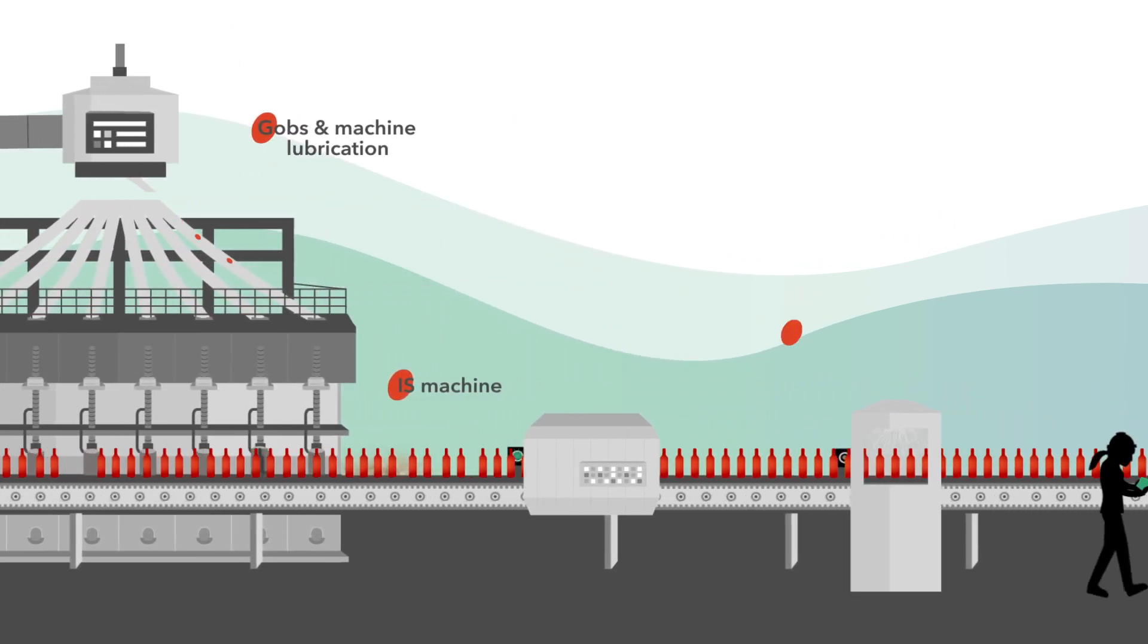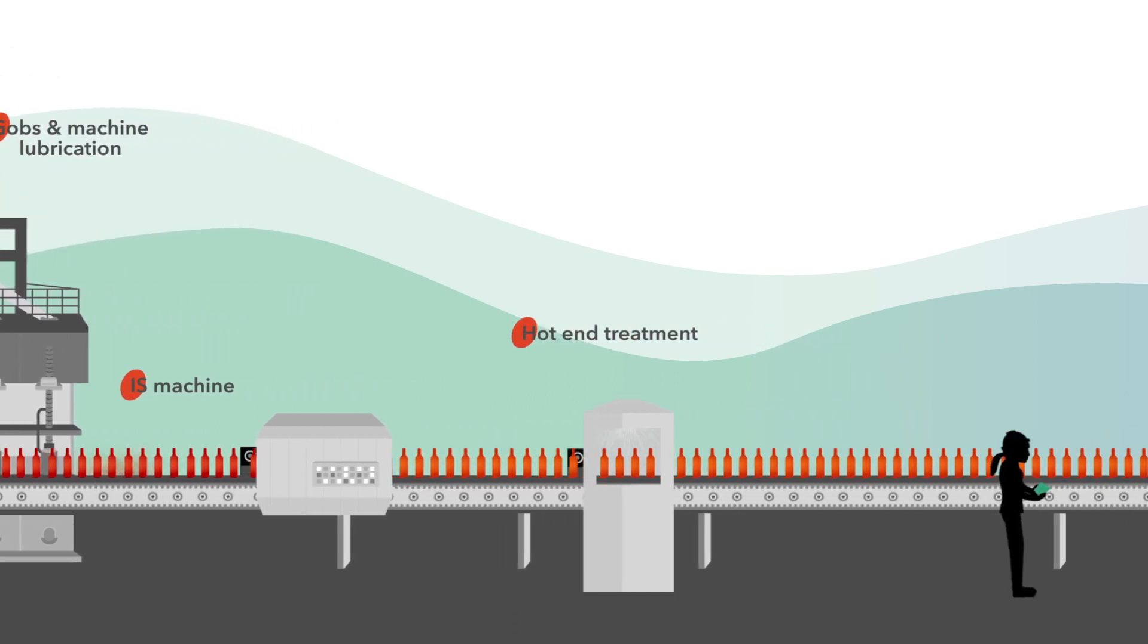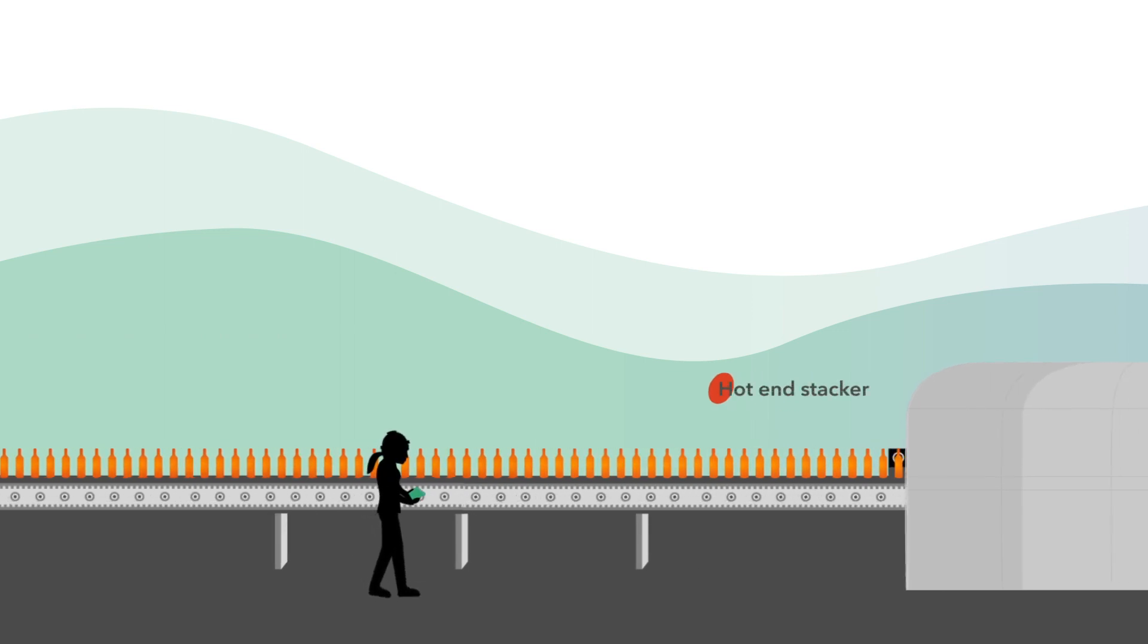Your real-time KPIs are displayed on SIL workstations or tablets in the plant, as well as on screens at the headquarters.